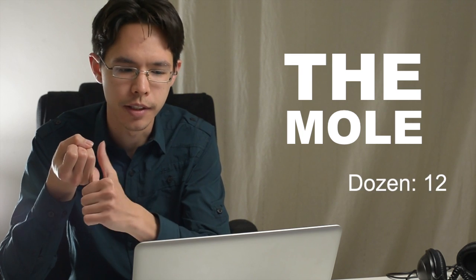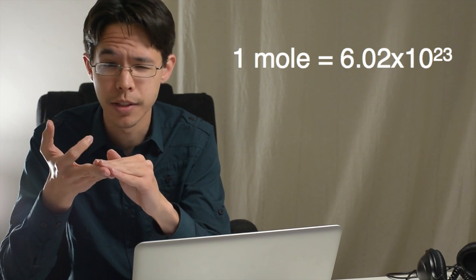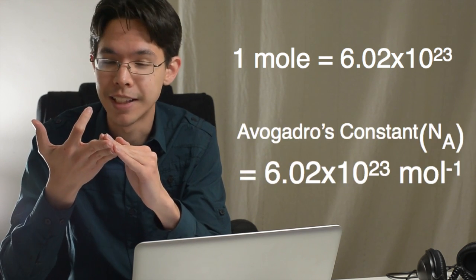To help with this we use the mole. The mole is just a number, just like a dozen or a hundred or a couple. A mole is defined to be 6.02 times 10 to the power of 23, and we call this number Avogadro's constant.